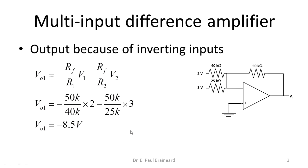Now because of these two voltage sources, the output voltage V01, let me call the output voltage because of the inverting inputs as V01, which equals minus 8.5 volts. This is just direct substitution.